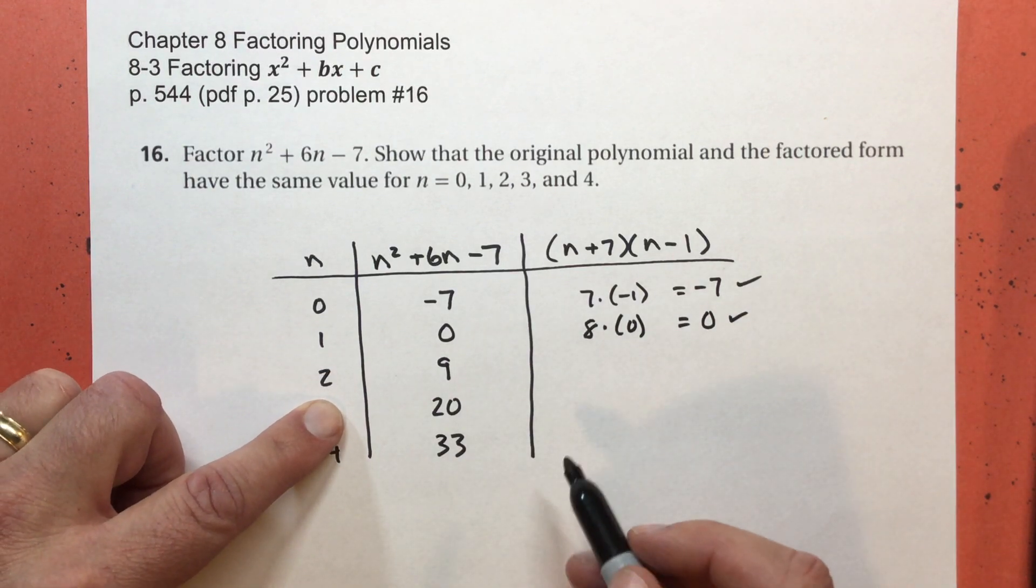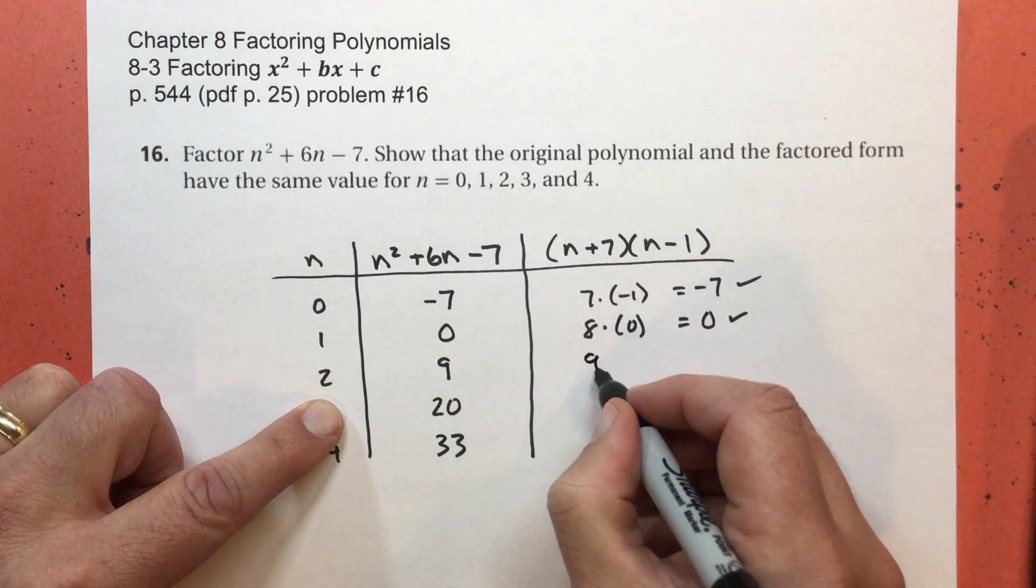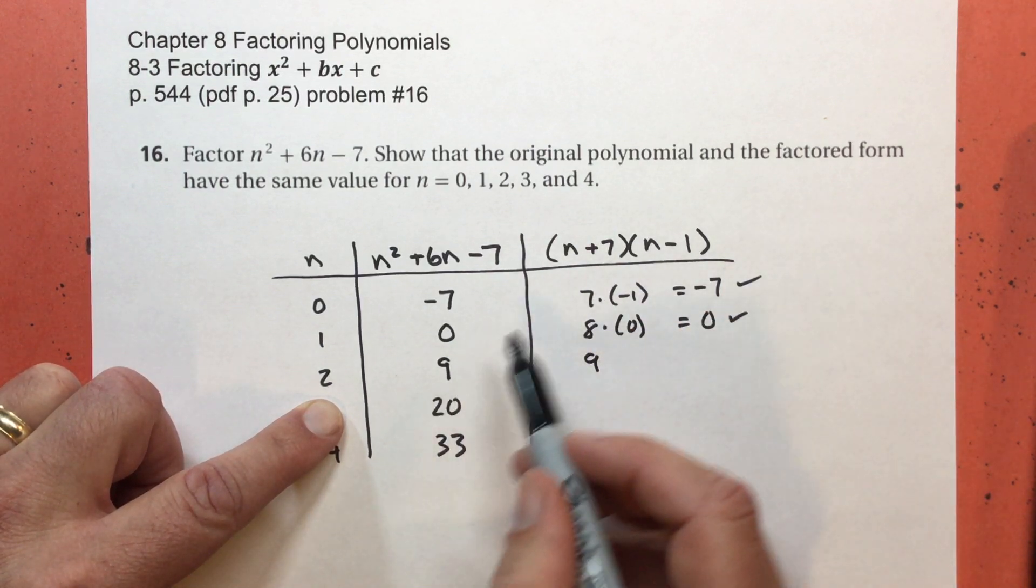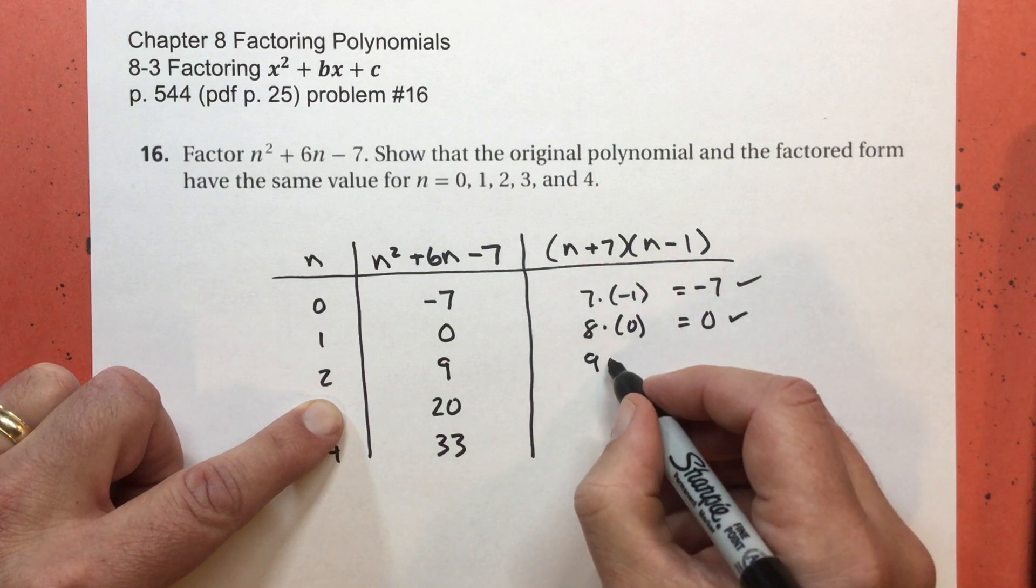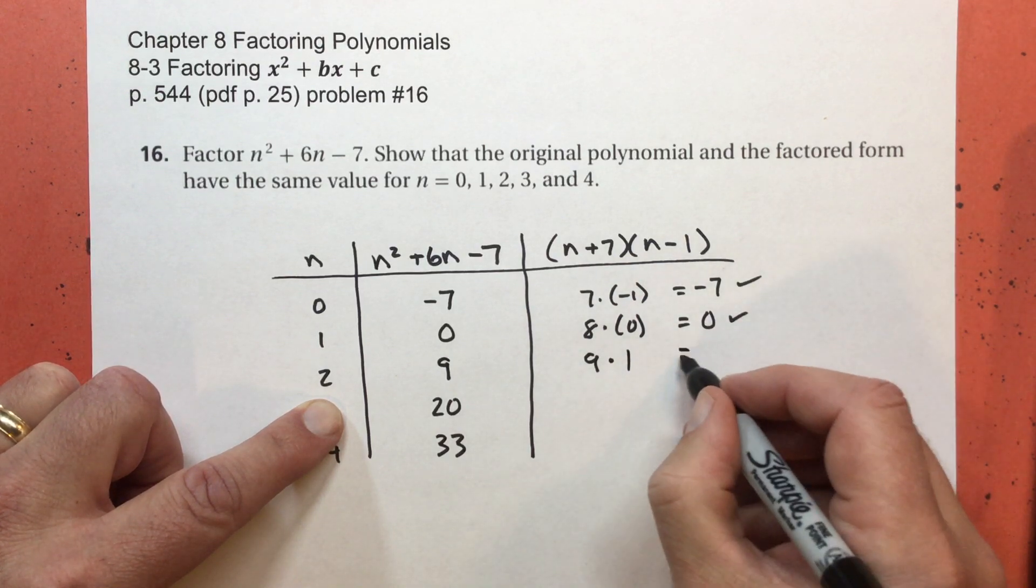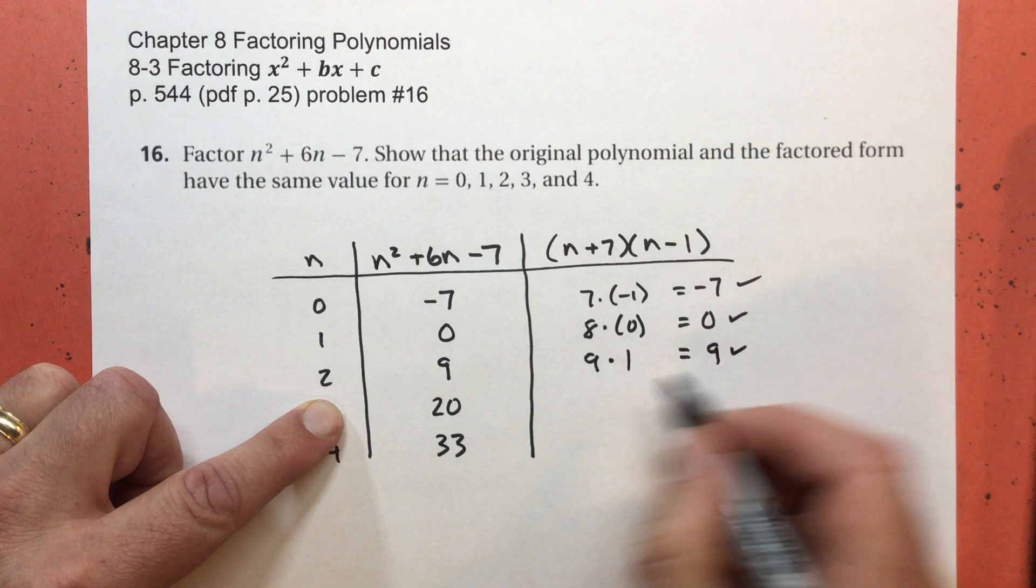Let's try 2. 2 plus 7 is 9. Do you see the pattern? 7, 8, 9. 2 minus 1 is 1. 9 times 1 equals 9. That's what I said it would be.